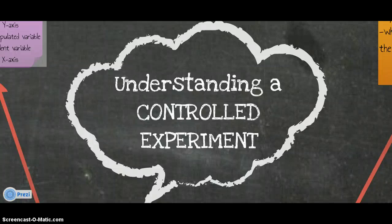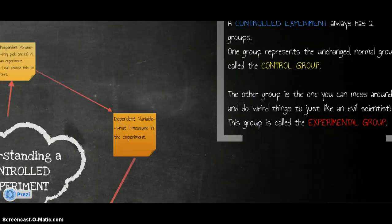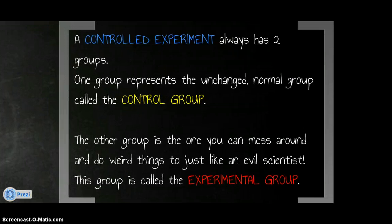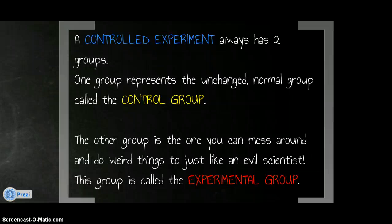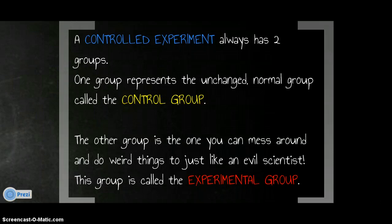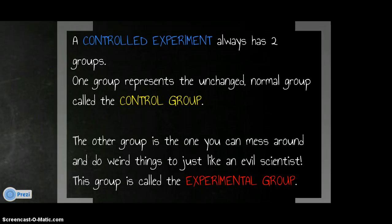Today's lesson is about understanding a controlled experiment. A controlled experiment always has two groups. One group represents the unchanged or normal group called the control group. The other group is the one that you can mess around and do weird things to, just like an evil scientist. This group is called an experimental group.